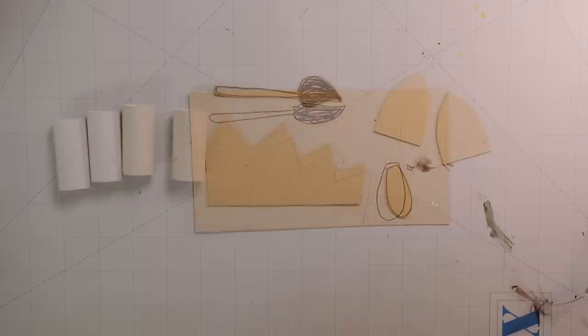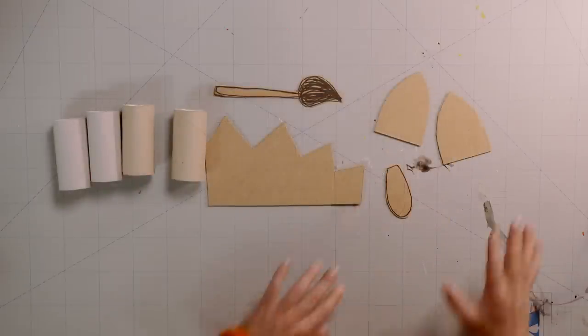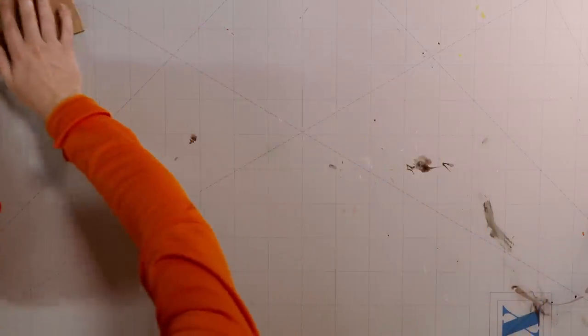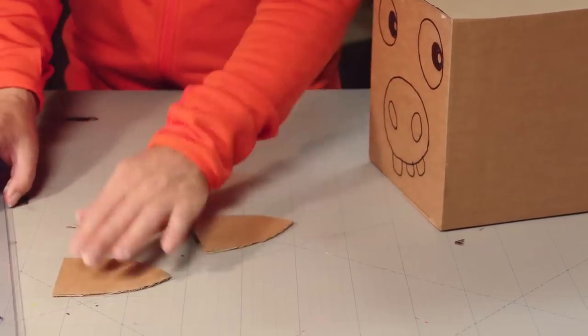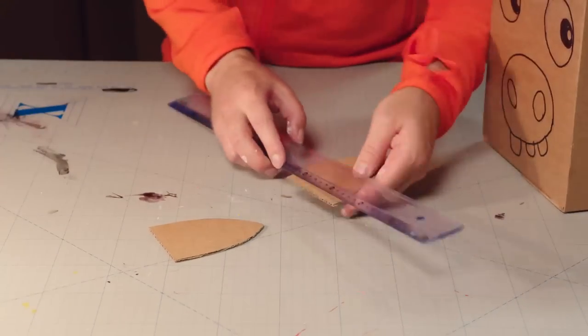Cut everything out and they are ready for glue. You'll need to fold some flaps for glue. Use a ruler to get them nice and straight.